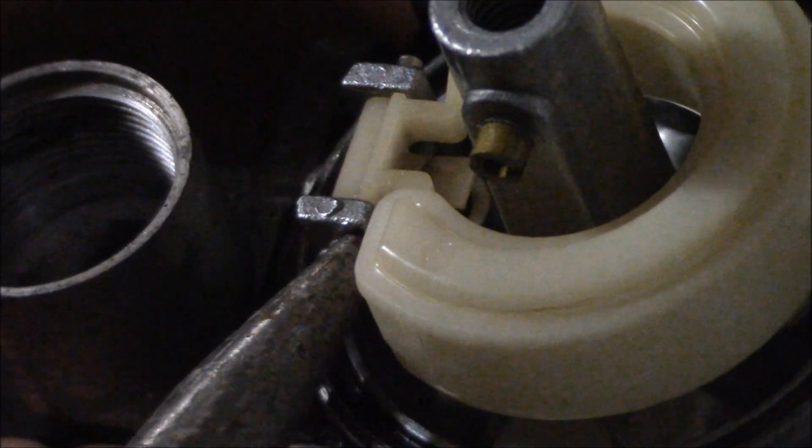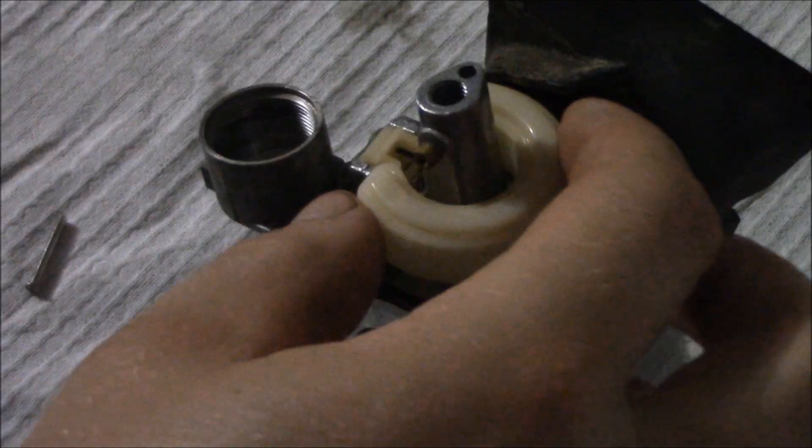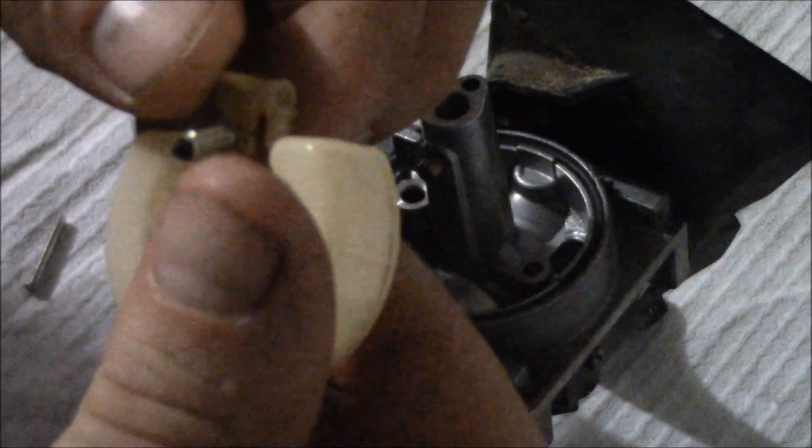Right here is the float hinge rod. You twist and pull at the same time, try not to hit your camera. Anyway, so that's the float and the needle.